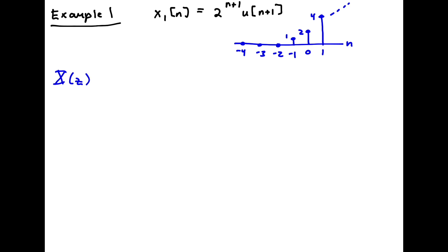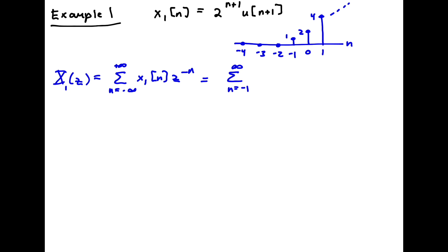So x1(z) is the sum from n equal minus infinity to plus infinity of x1(n) times z^(-n). Since this sequence starts with non-zero values at n = -1, we can change the limits of summation. We'll sum from n equal minus 1 to infinity of 2^(n+1) times z^(-n).